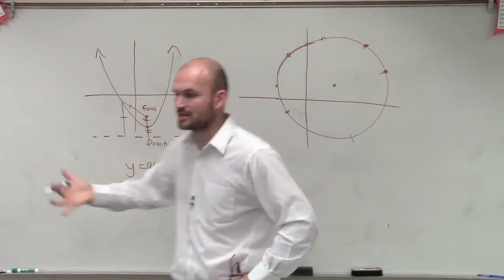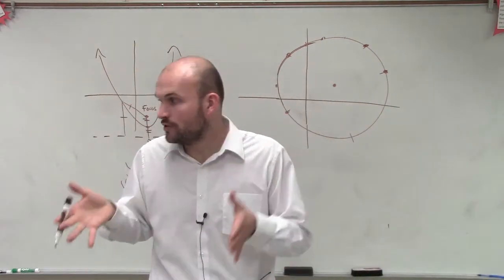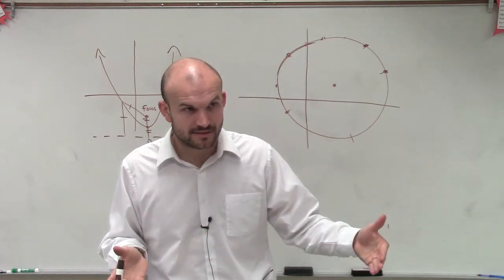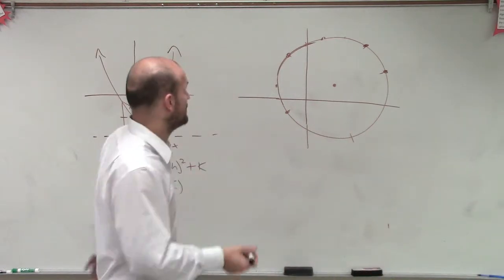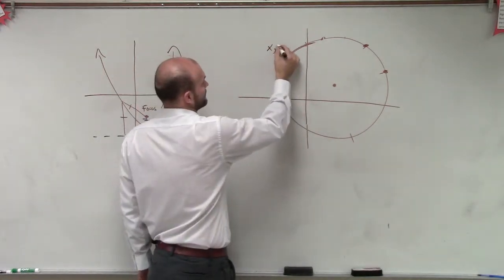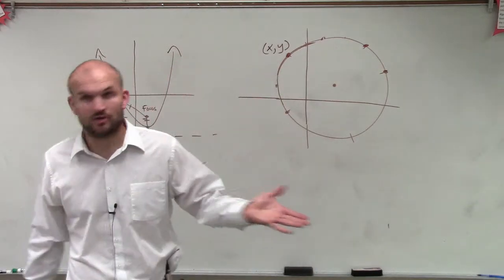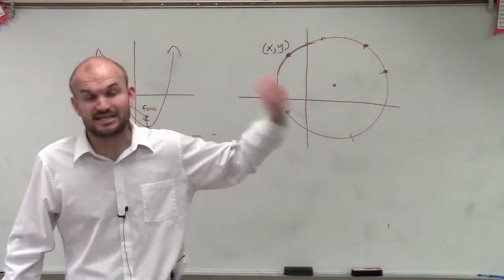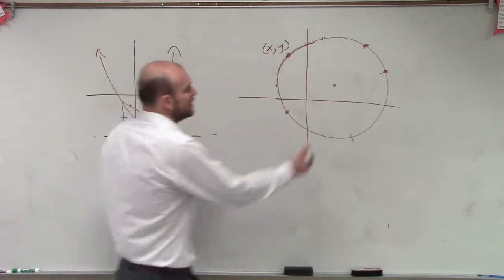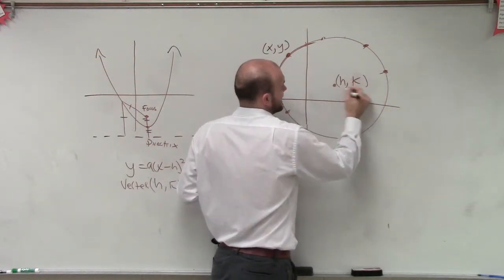Now, the one important thing when we talk about our definition of a circle is we said all the points are equidistant to the center — they're all equal. So what I'm going to do is let's pick an arbitrary point x, y. We don't need to pick all the points, because one, it has infinitely many points, and two, all the points are all equidistant to the same center. And let's call the center point h comma k.